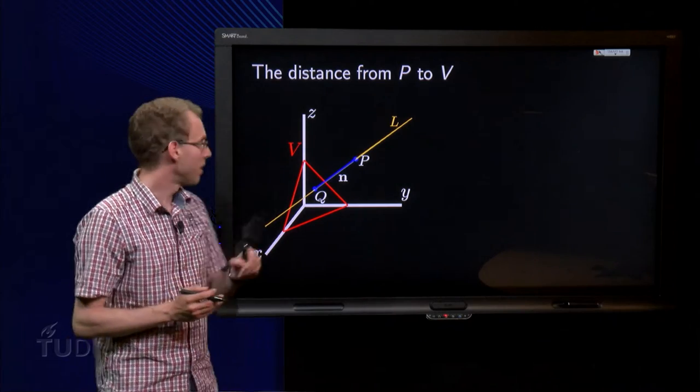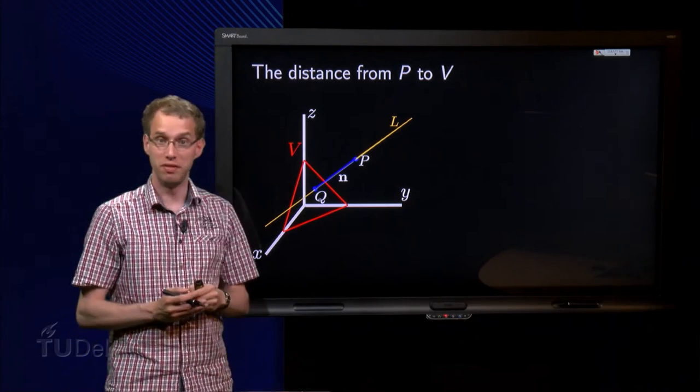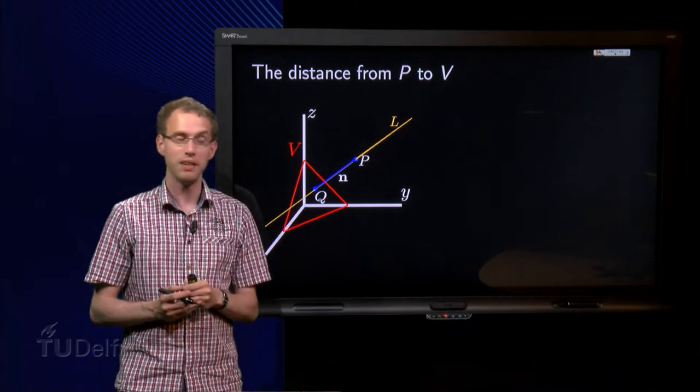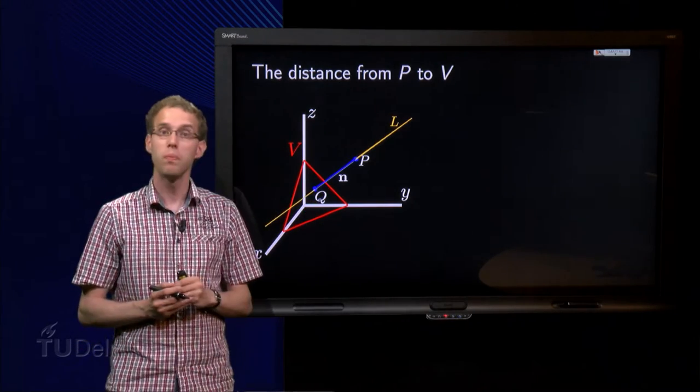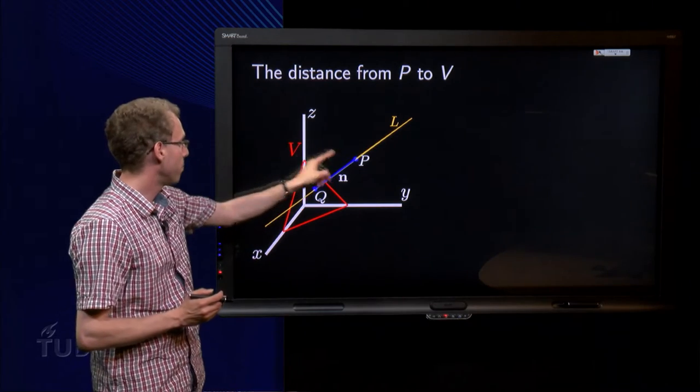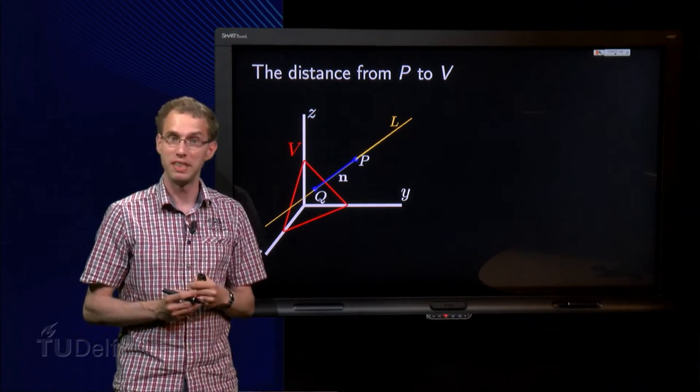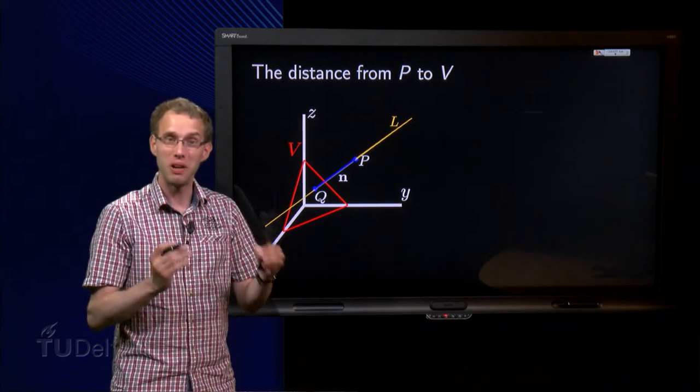So let's see. Here we have our plane V in red, with a point P in blue. I want to find the distance from P to the plane V. So what is the construction? How am I going to do that?